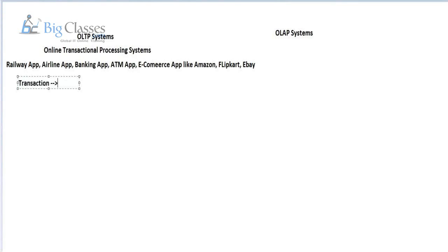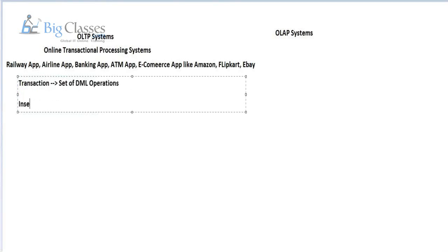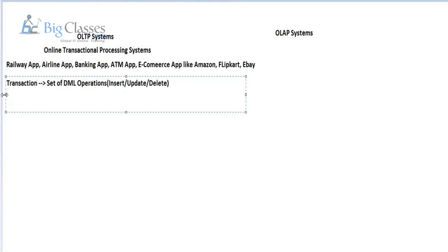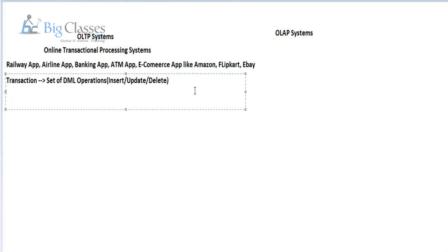Technically speaking, a transaction is a set of DML operations. When I say DML operations, it means we either insert the data, update the data, or delete the data from the OLTP system. Whenever you are performing any transaction within the OLTP system, you are essentially adding or modifying data in the OLTP system.